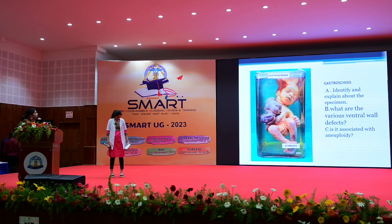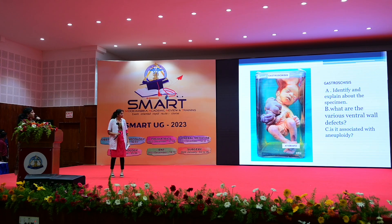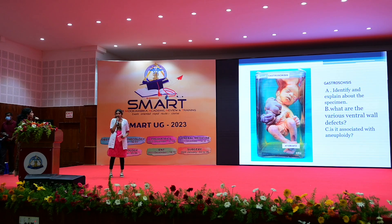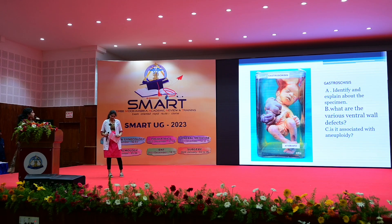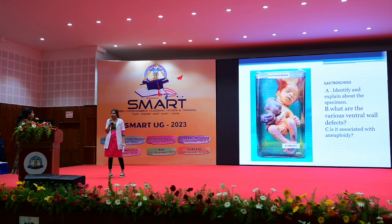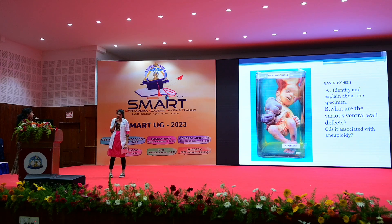Here you can see the intestinal herniation to the outside. In contrast to omphalocele, in gastroschisis it is not covered by a membrane. What are the various ventral wall defects and how do you differentiate them? Gastroschisis, omphalocele, and body stalk anomaly are all included. Gastroschisis is not associated with amnion. In case the child is born, the chances of survival are good after proper surgical correction.